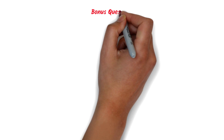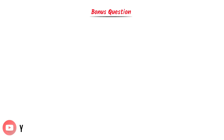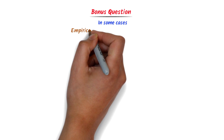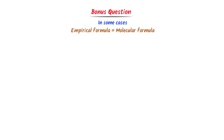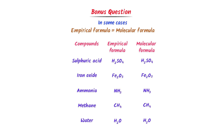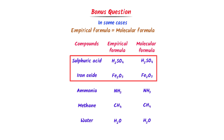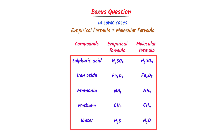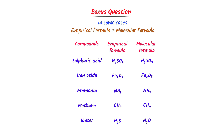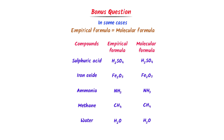Lastly, let me teach you one bonus concept which is often asked in MCQs. Remember that there are many compounds whose empirical formula and molecular formula are the same — for example, sulfuric acid, iron oxide, ammonia, methane, and water. These compounds all have the same empirical formula and molecular formula. If you want to learn about calculating empirical formula, watch our lecture — the link is given in the description.